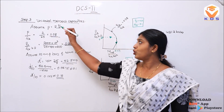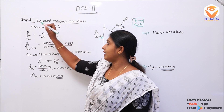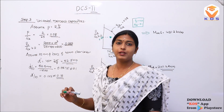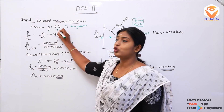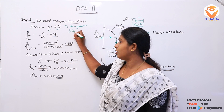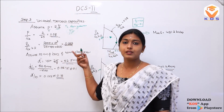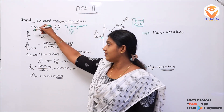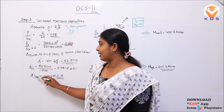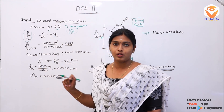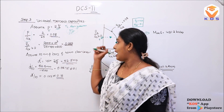In the third step, we find the uniaxial moment capacities. We assume a percentage reinforcement — we adopt 3%, which gives us a safe design. The three parameters needed are: P/FCK, PU/(FCK×B×D), D'/D. Before reading the chart, we calculate these parameters. We need to find the heading of the uniaxial moment capacities using the interaction charts.